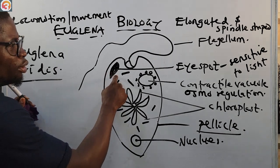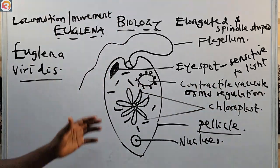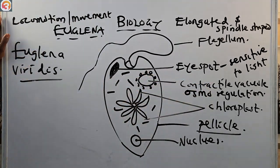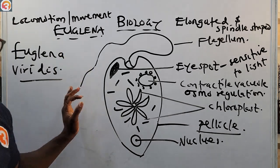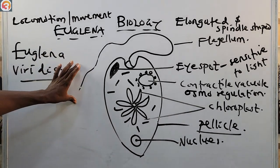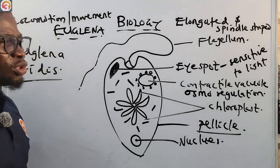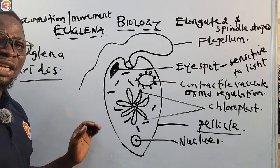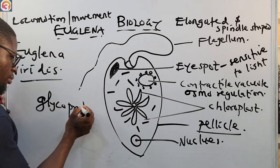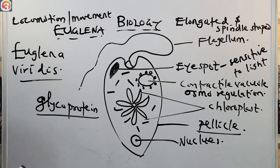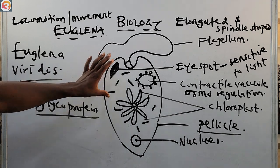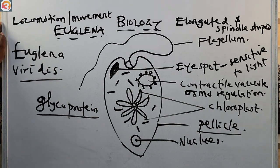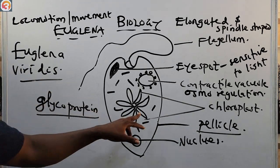Now for the animal-like characteristics. First, it has an eye spot that is sensitive to light — that is one animal-like characteristic. It also has a flagellum used for movement or locomotion. Furthermore, it does not have a cellulose cell wall; instead it has a membrane made of glycoprotein. It also has a contractile vacuole used for osmoregulation. These are the animal-like characteristics of Euglena viridis.